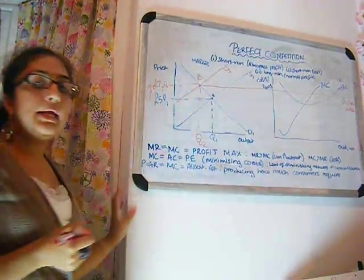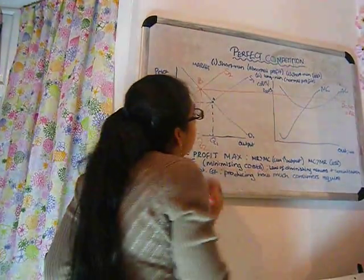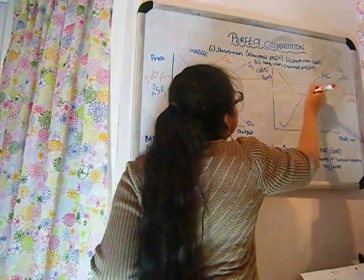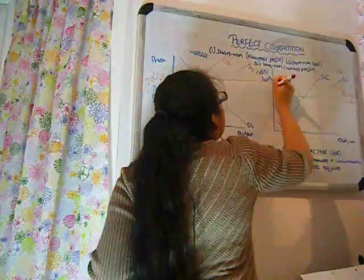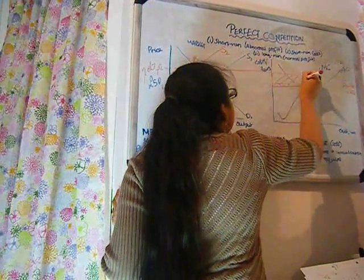This demand curve is equal to the new marginal revenue which is equal to the new average revenue. Now a firm will make an abnormal profit in this scenario.